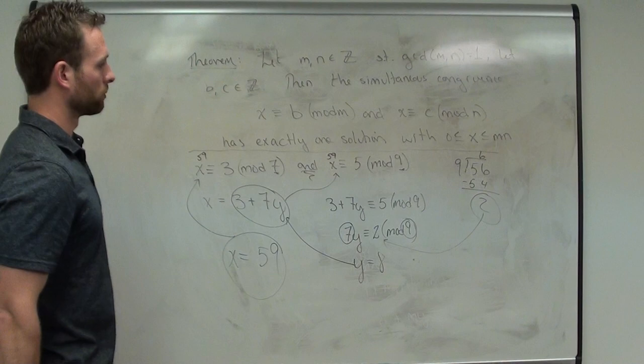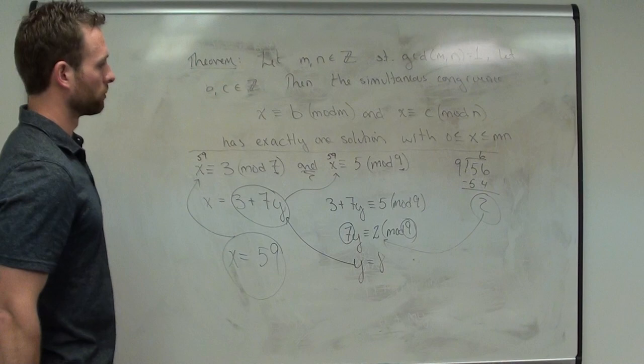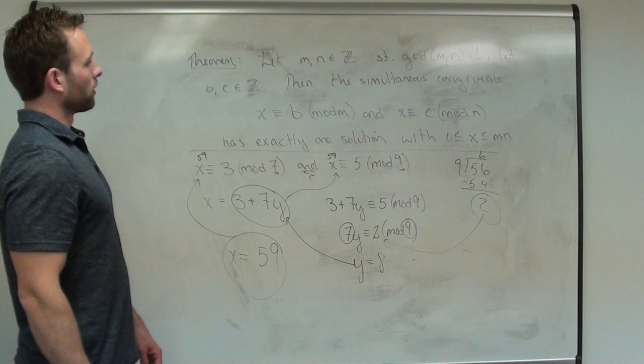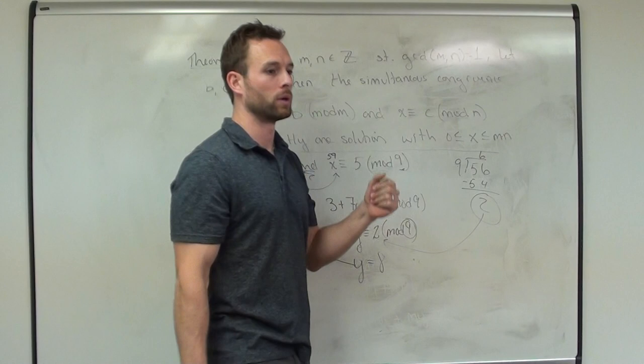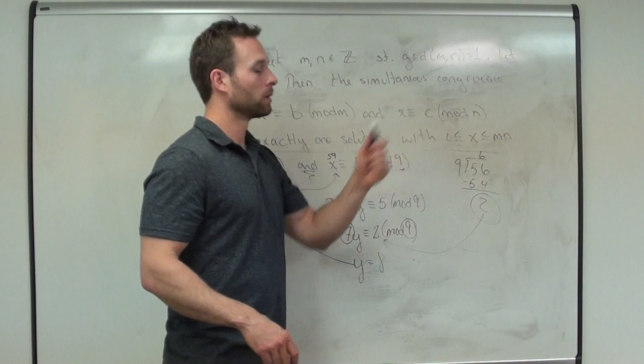For any of you who take abstract algebra and ring theory, we'll talk about it there. There are generalizations of this too — x congruent to a, b, c, d, and so on — but we'll just focus on the 2-by-2 system. In your homework there is a 3-equation system; you don't need to do it, just threw it out there for fun. The one on your exam will be a 2-congruence system.